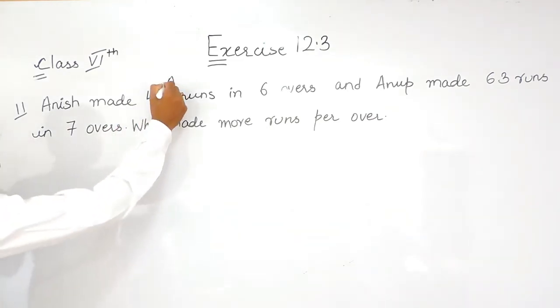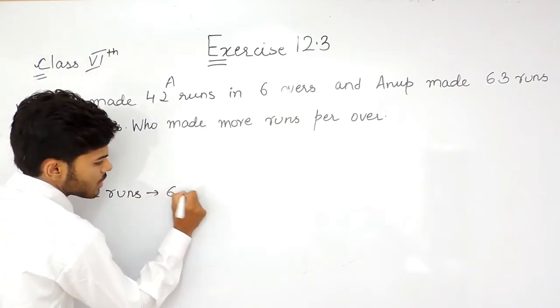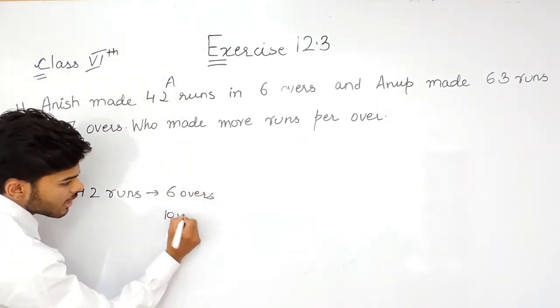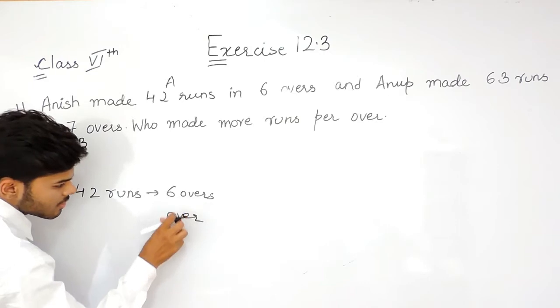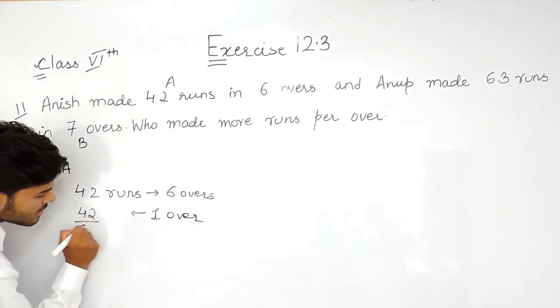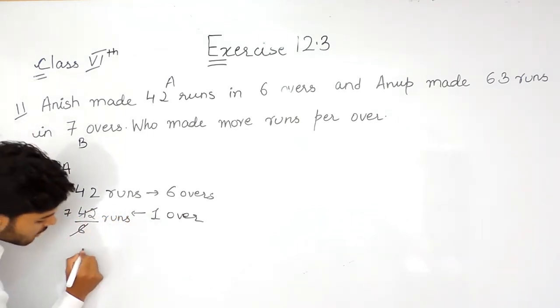Supposingly, this is case A and this is case B. In case A, Anish scored 42 runs in 6 overs. Means in 1 over, he will score 42 upon 6 runs and that equals 7 runs.